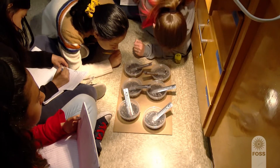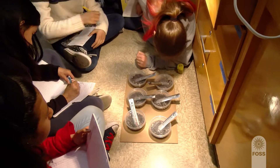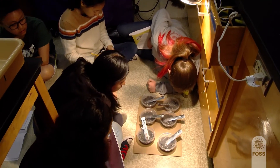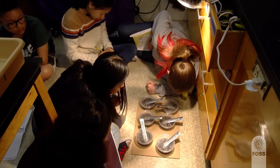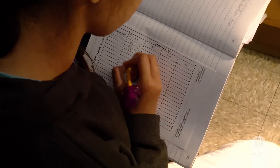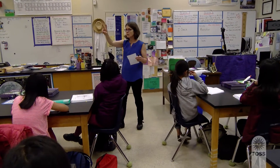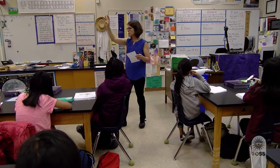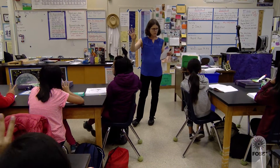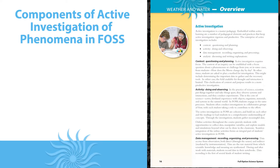FOSS Active Investigation is more than hands-on science. It is how science becomes accessible for all students. Students use science and engineering practices and cross-cutting concepts to construct explanations about real-world phenomena. These are the components of active investigation, although they don't always follow the same linear progression.